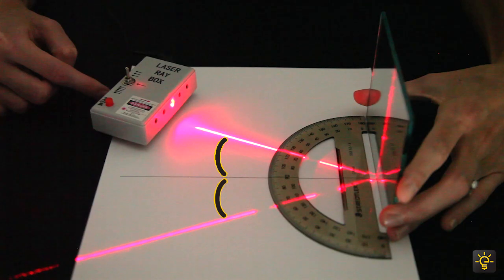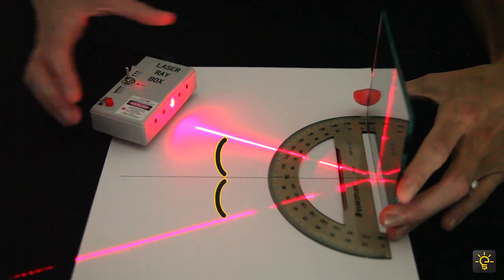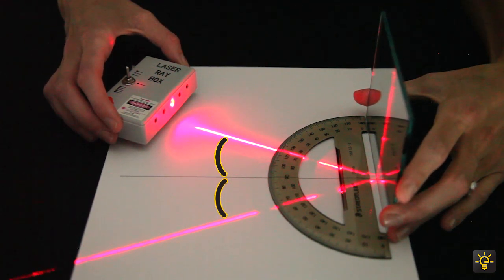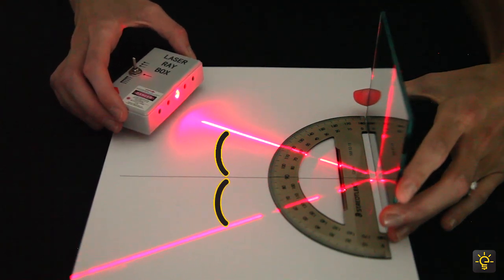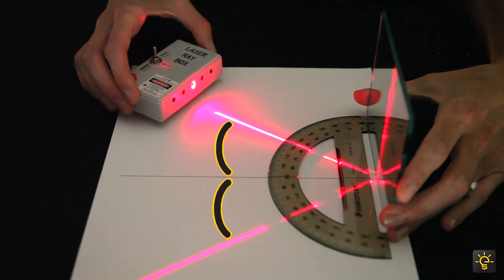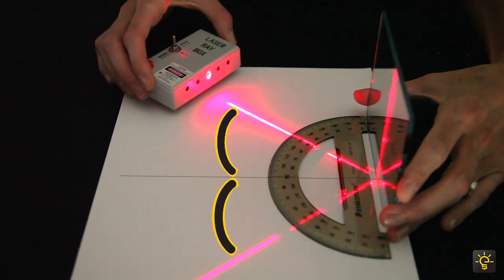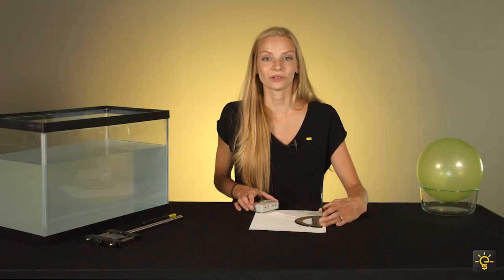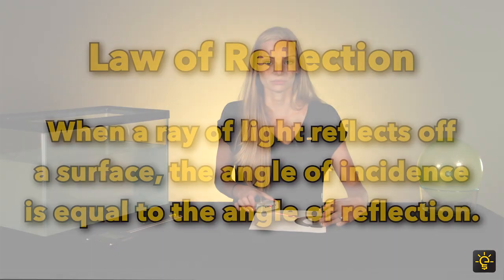By putting a protractor against the surface, we can see that the angle of incidence is always equal to the angle of reflection. As I move the ray box, the angle of incidence continues to remain equal to the angle of reflection. This is called the law of reflection.